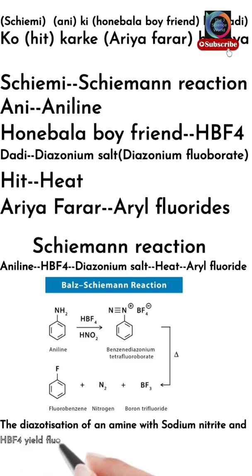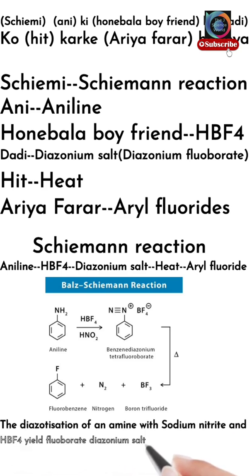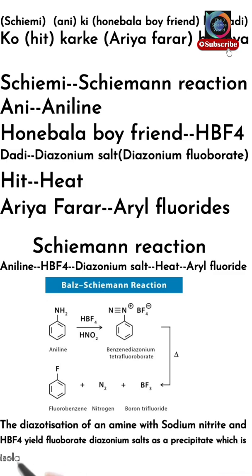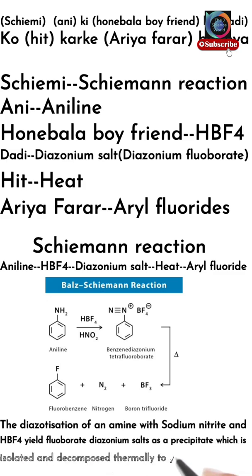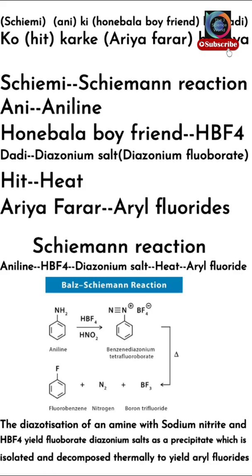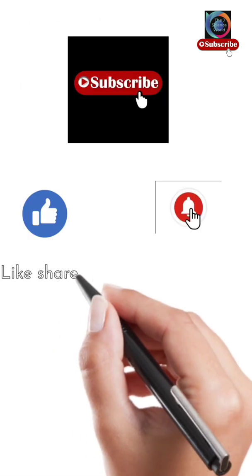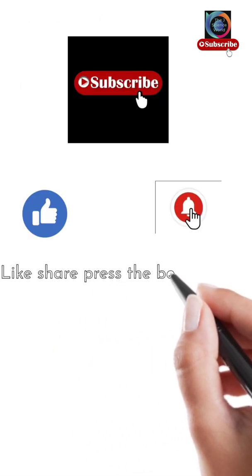We can also write it like this: the diazotization of an amine with sodium nitrite and fluoroboric acid HBF4 yields the fluoroboric diazonium salt as a precipitate, which is isolated and decomposed thermally to yield aryl fluoride.